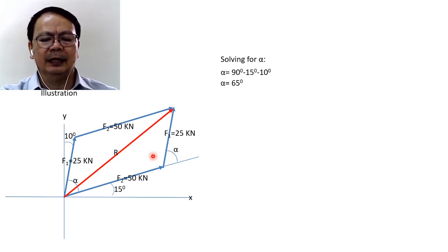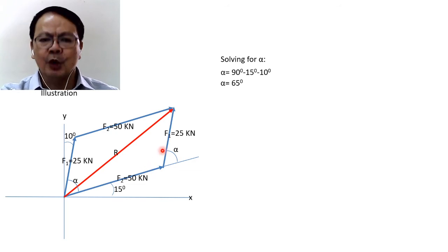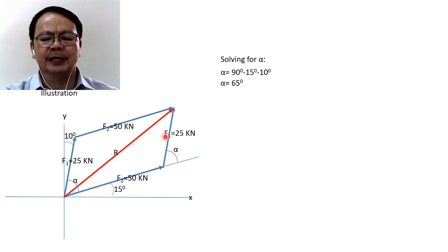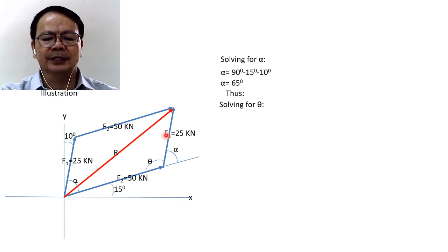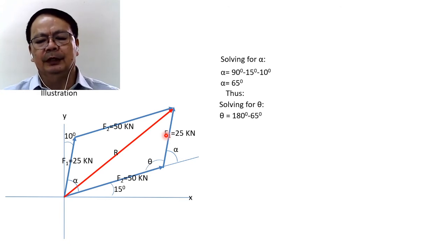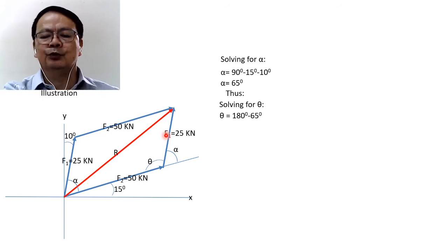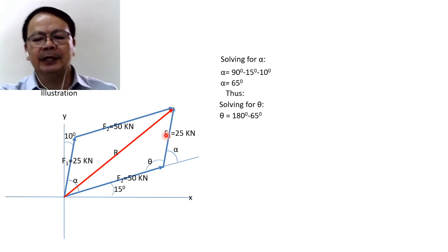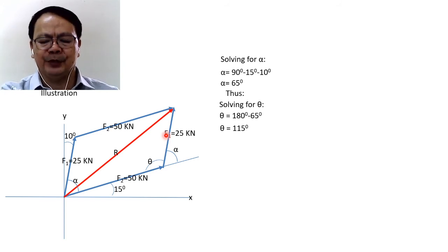Now we look at the angle opposite R in the parallelogram. This angle and angle alpha are supplementary angles. Assuming that angle is theta, theta is equal to 180 degrees minus 65 degrees, which gives us a value of 115 degrees.